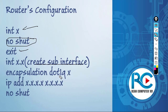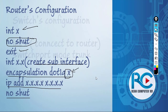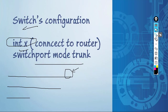Then we're going to create the encapsulation dot1Q and set the VLAN that we want on that sub-interface, and we set the IP address, then no shutdown. That's the router configuration - it's a little bit complex.